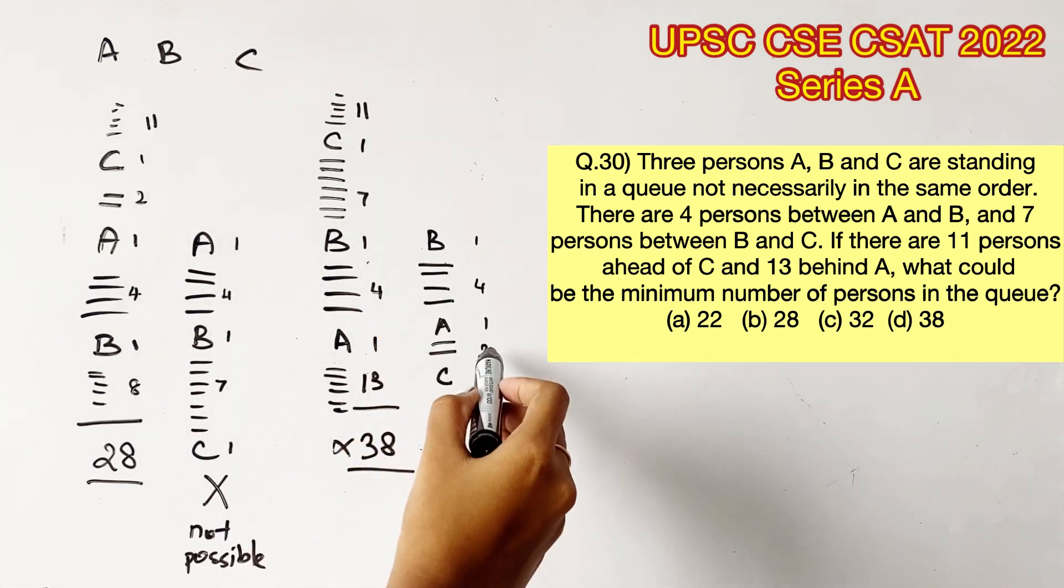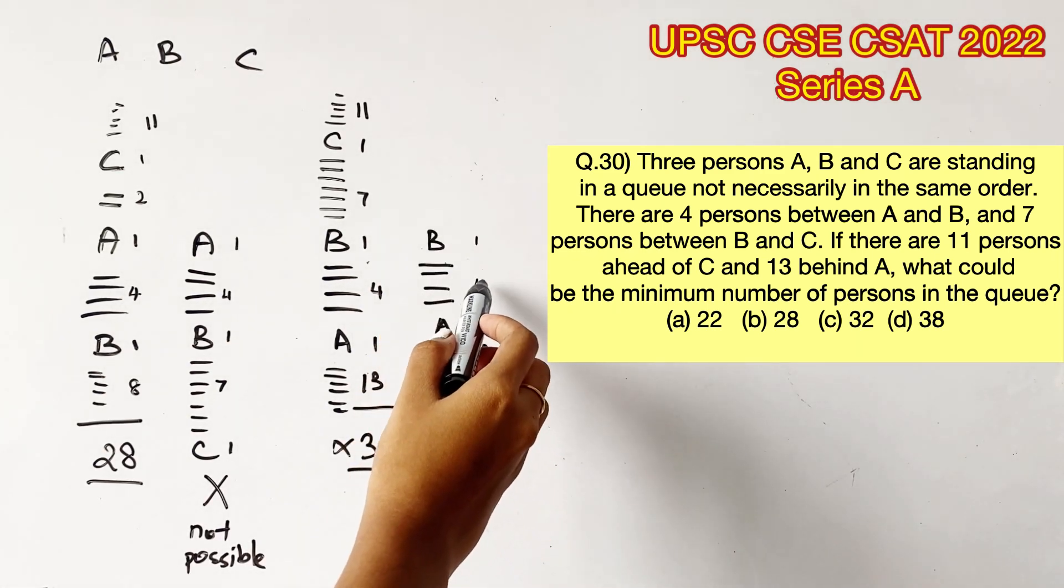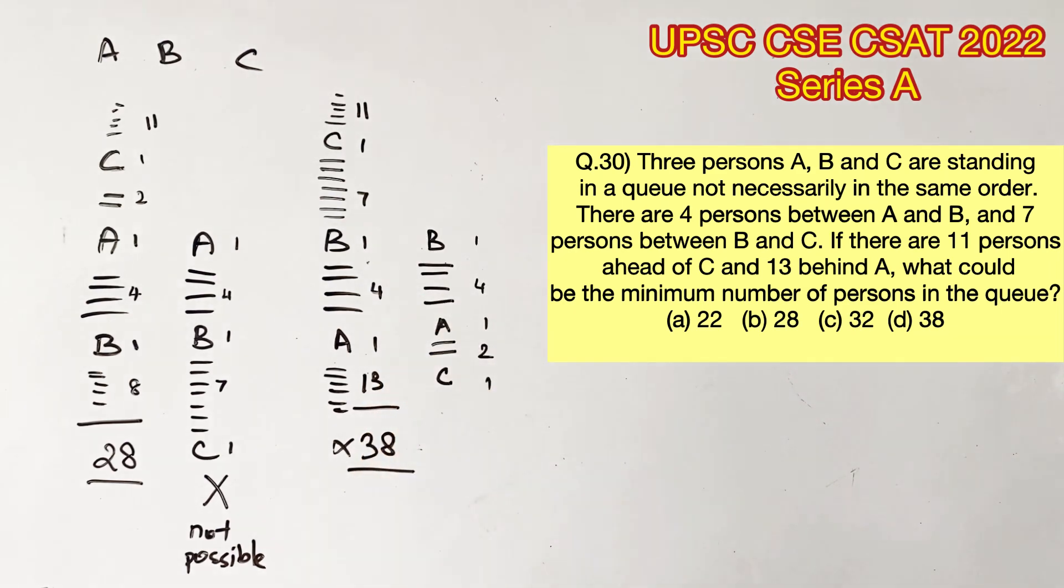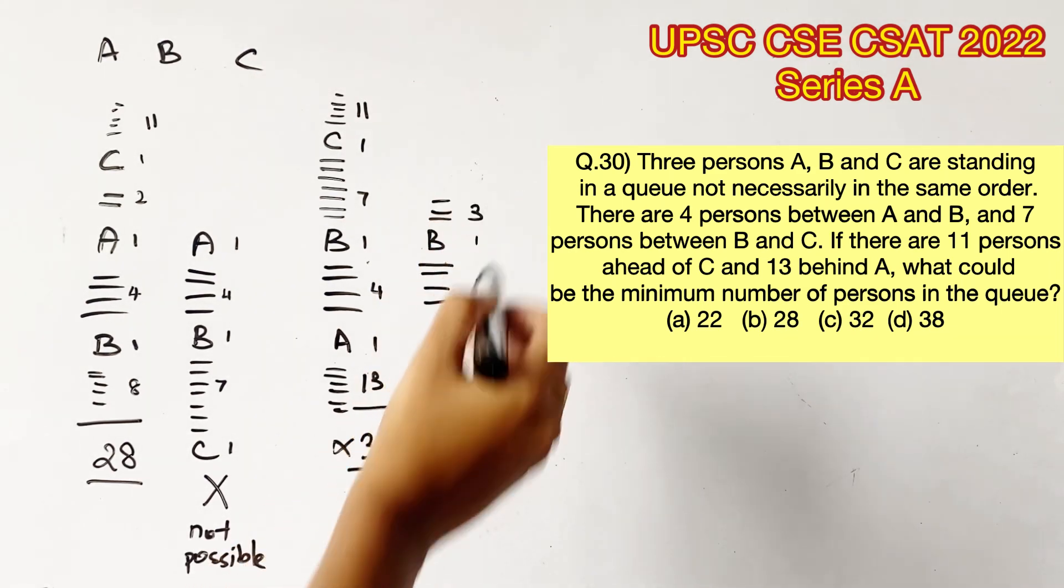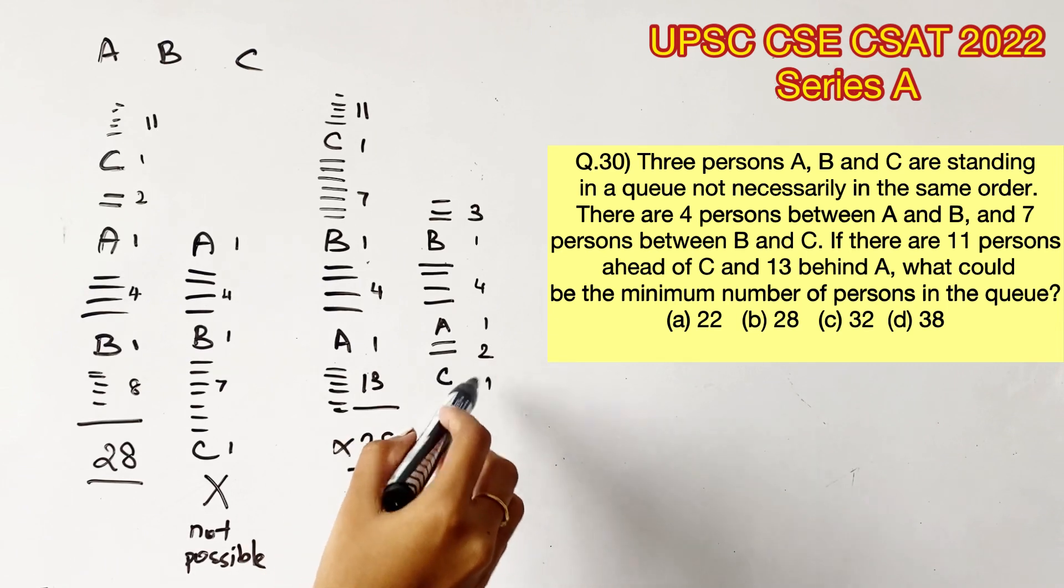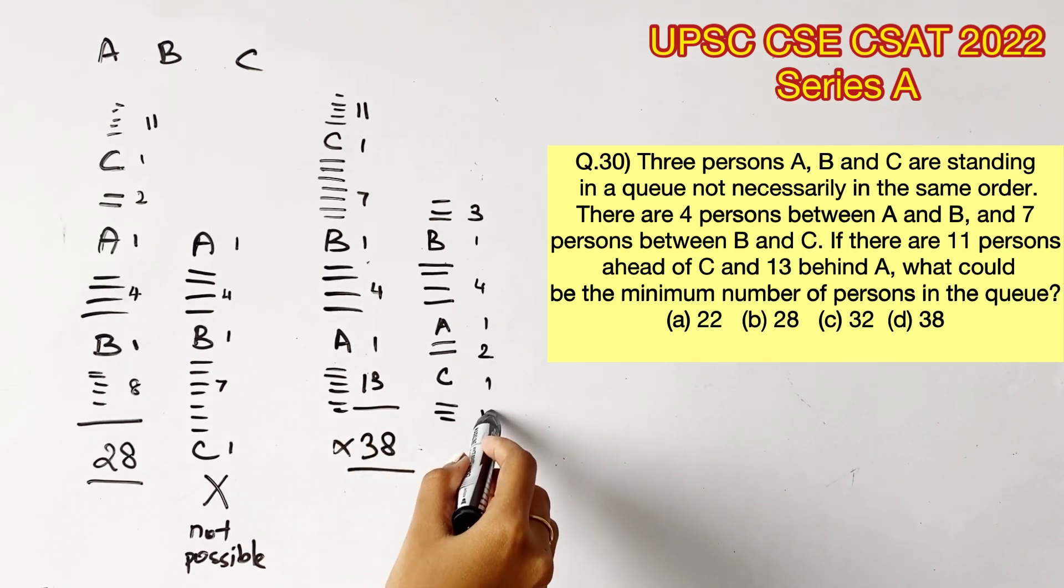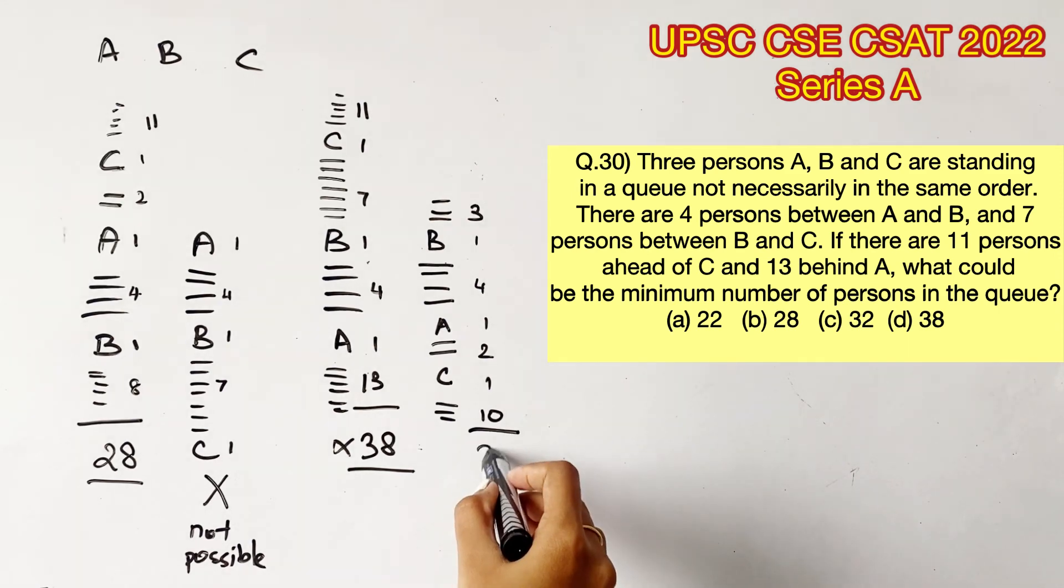Let's check here now. Let's mark 11 ahead of C. There is already 8 ahead of C. So 11 minus 8 is 3. Then let's mark 13 behind A. There is already 3 behind A. So remaining is 10. Let's add all these up. This will give us 22.